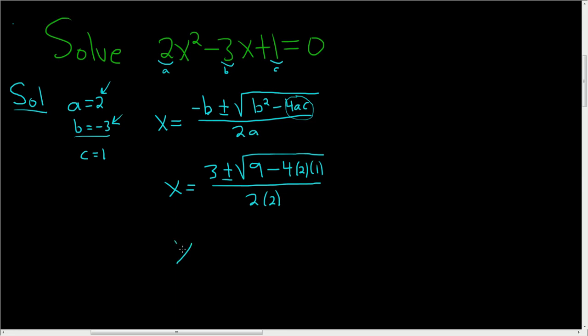So X is equal to 3 plus or minus the square root, 4 times 2 times 1, that's 8. So 9 minus 8, all divided by 4. Let's keep going.